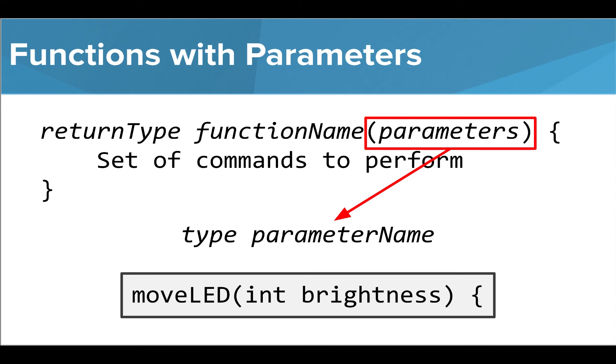For example, if we wanted to use a parameter inside our moveLED function, we write the type, in this case int, followed by the parameter name, in this case brightness. Let's look at an example.